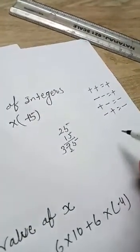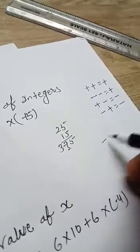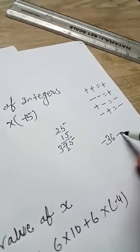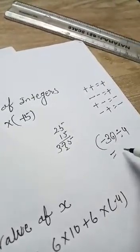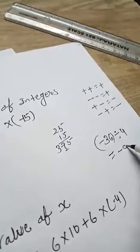Same way in divide also. For example, minus 36 divided by 4. Minus plus, different sign, so minus 9.